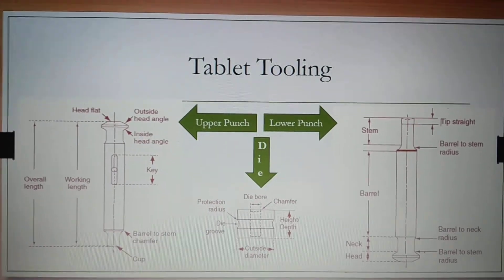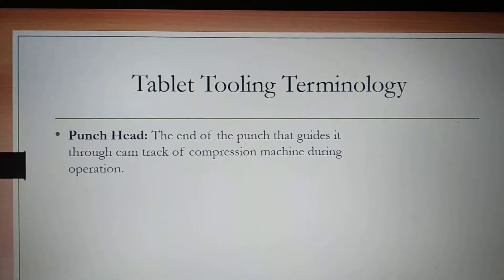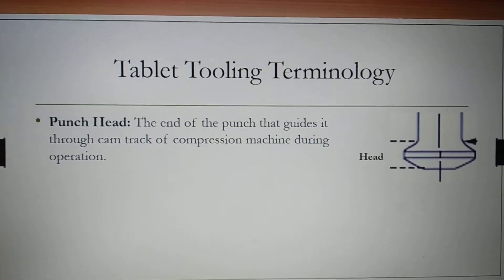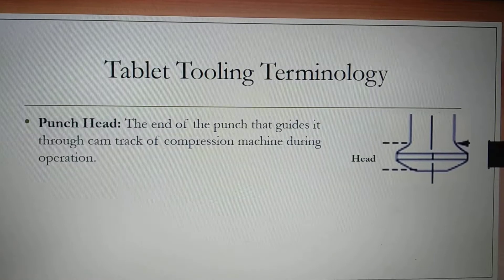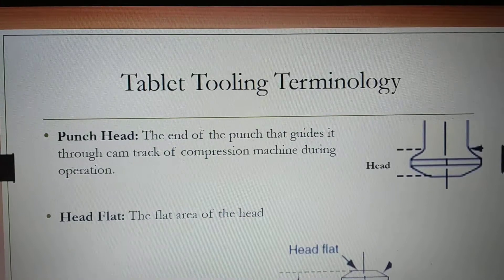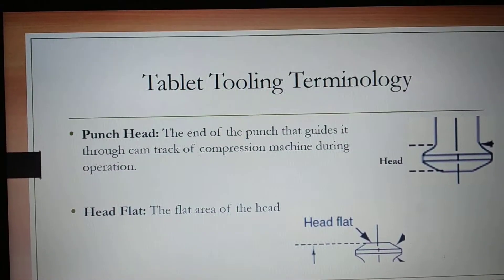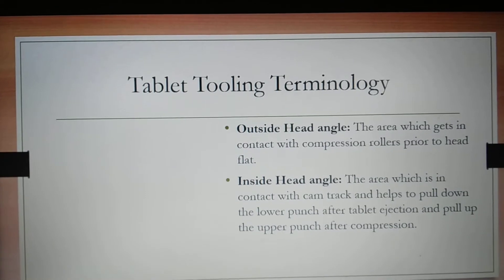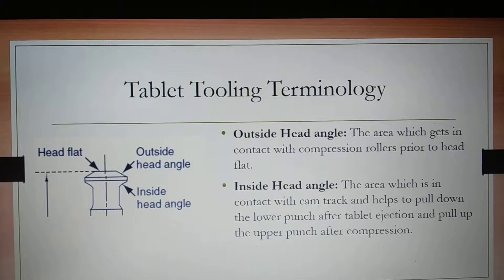In this video we are going to learn more about the different terminology used for tablet toolings. The first one is punch head — the end of the punch that guides it through the cam track of the compression machine during compression is called the punch head. Next one is head flat — the flat area of the head is called head flat.